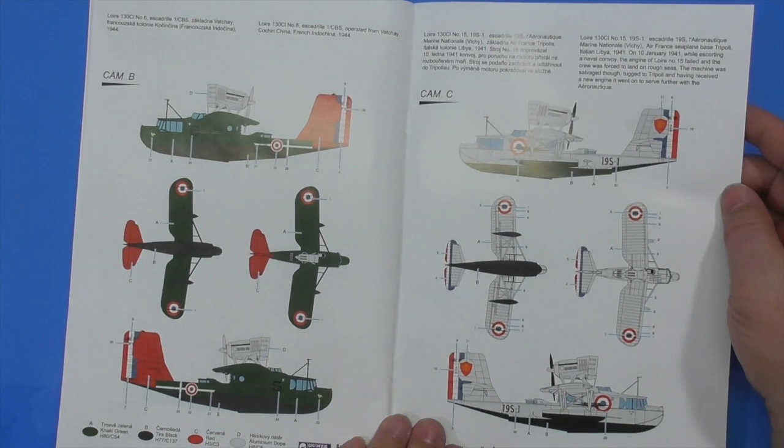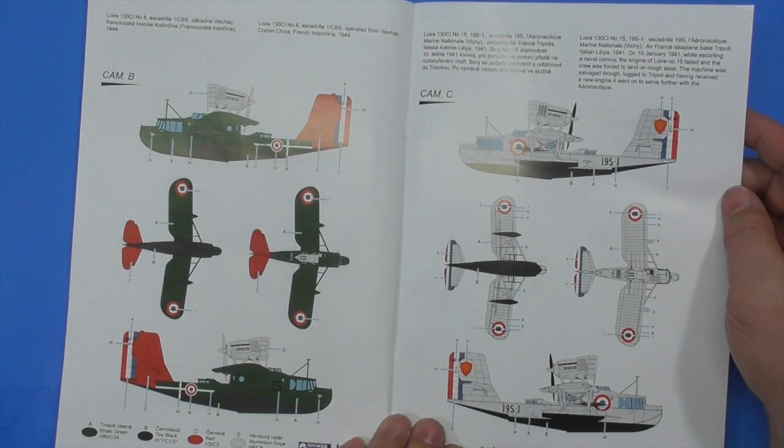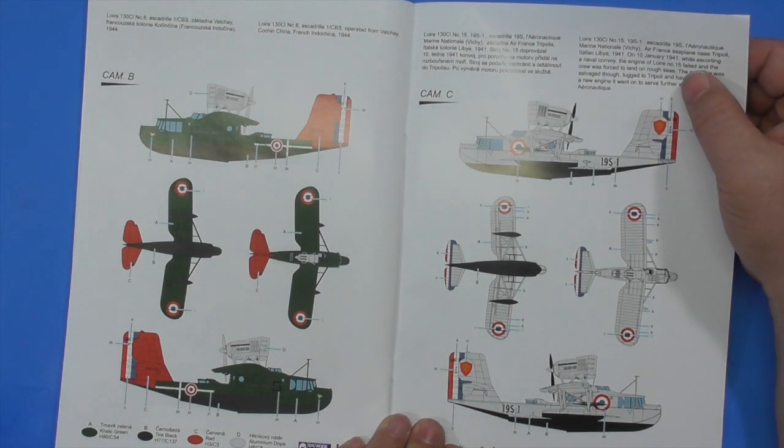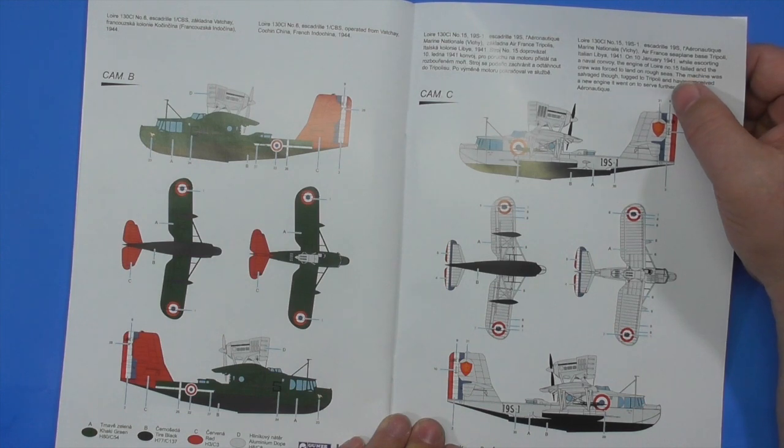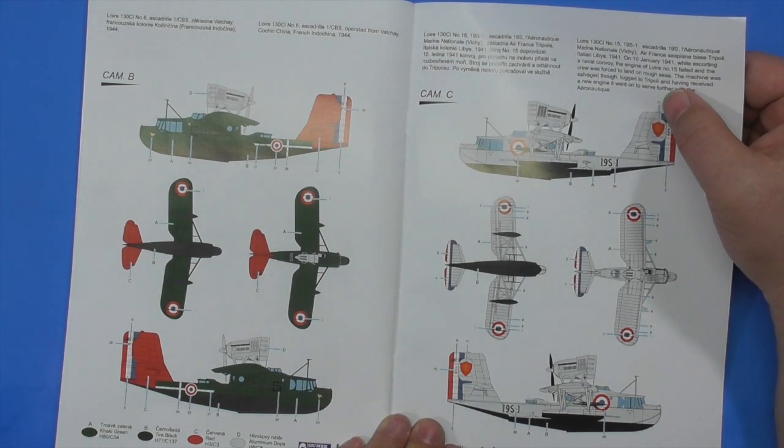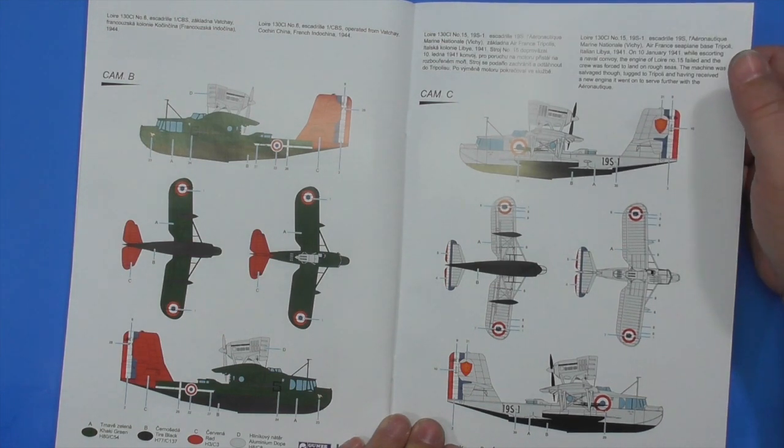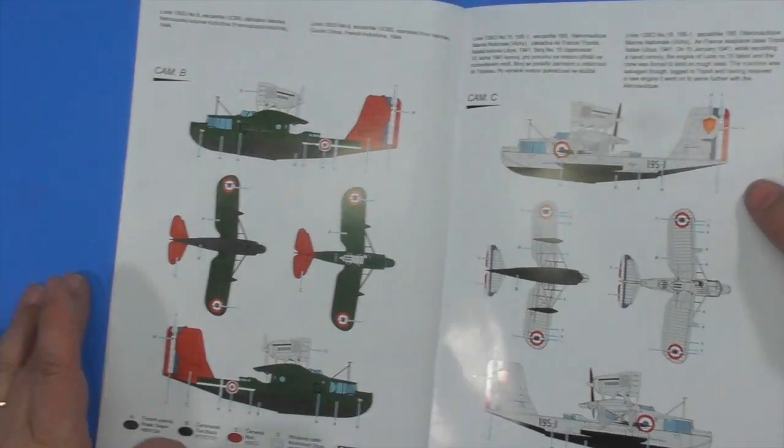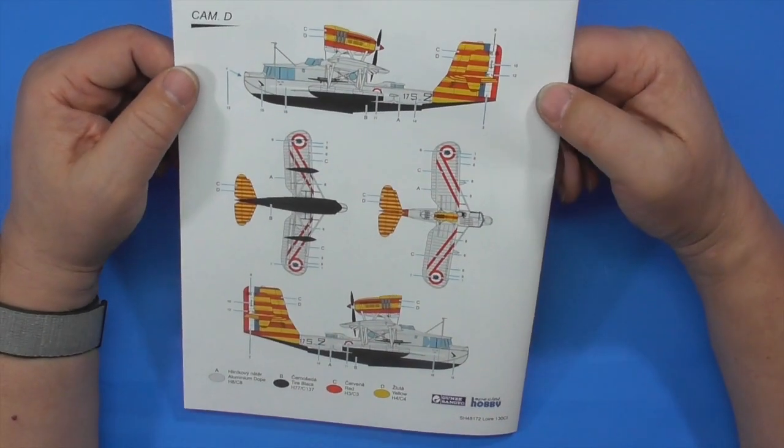Tripoli. Salvaged, tugged to Tripoli and received a new engine. So it was based in Tripoli in 1941. The engine failed and the crew was forced to land on rough seas. So this one actually has a story with it. And it's got nice coloring too. And there you go, another nicely colored one.